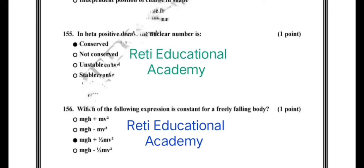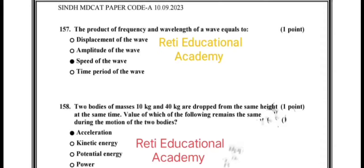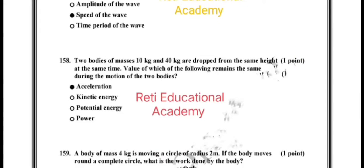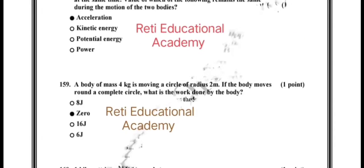Question number 157: the product of frequency and wavelength of a wave equals to, and the correct option is it is equal to the speed of the wave. Question number 158: two bodies of masses 10 kg and 40 kg are dropped from the same height at the same time; value of which of the following remains the same during the motion? The correct option is the value of acceleration will remain the same.